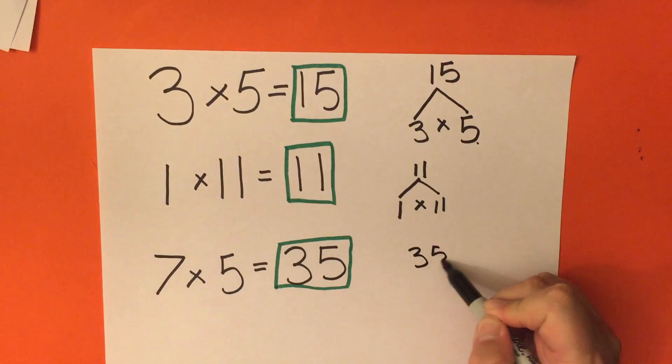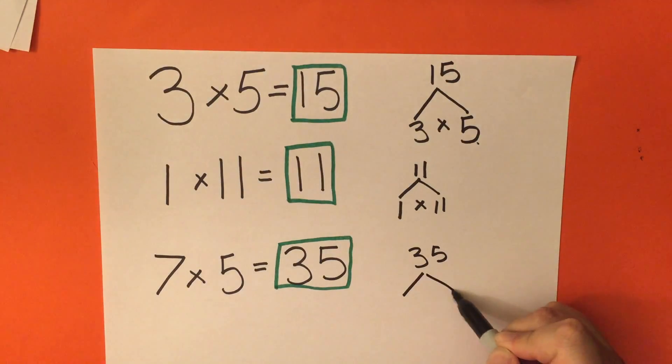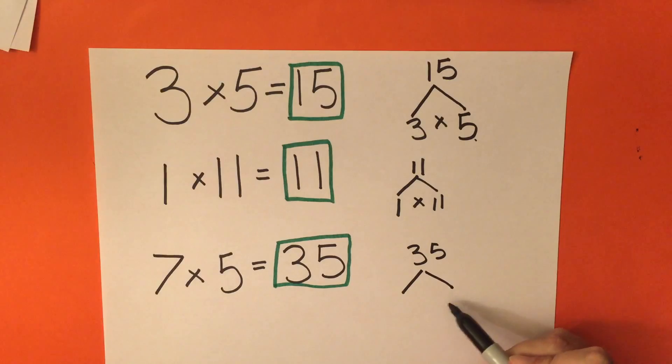So, 35 is our tree, split off with two factors of 7 times 5.